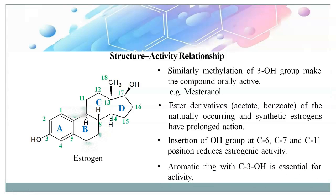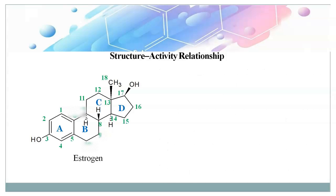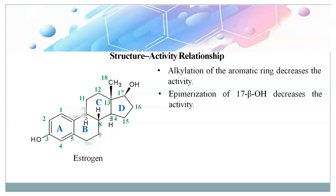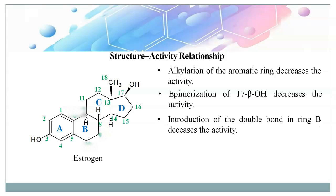The aromatic ring with its third hydroxyl group is very essential for activity. Alkylation of the aromatic ring decreases the activity. Epimerization of the 17-beta-hydroxyl group also decreases the activity. Introduction of a double bond in ring B likewise decreases the activity.